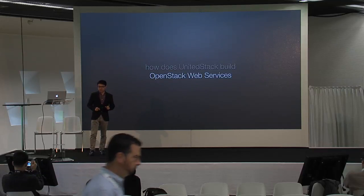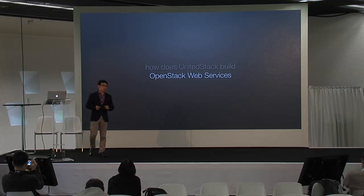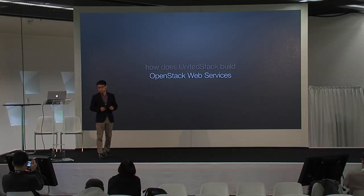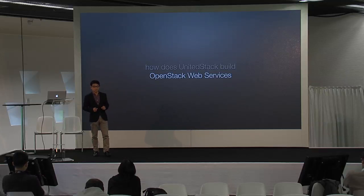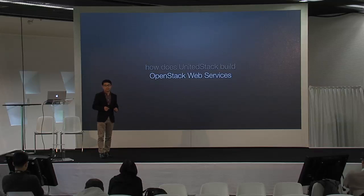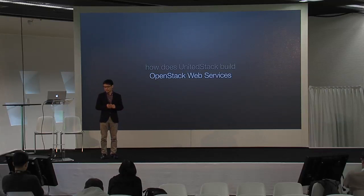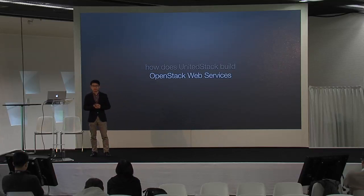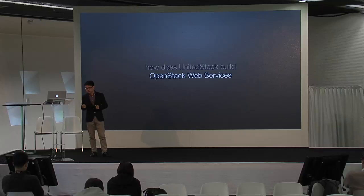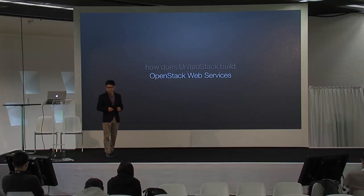UnitedStack is an OpenStack cloud service company in China. We build a public cloud providing services for enterprises and individuals. How do we build OpenStack from an open source project into open source web services, just like what AWS does?